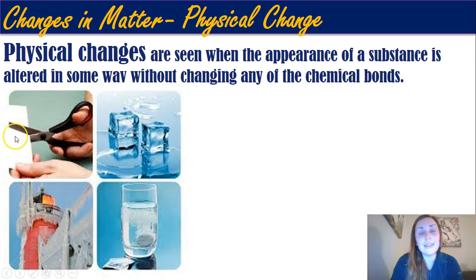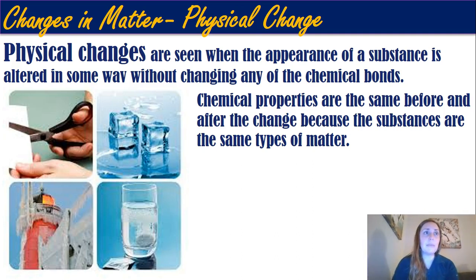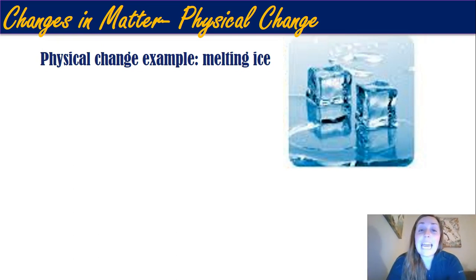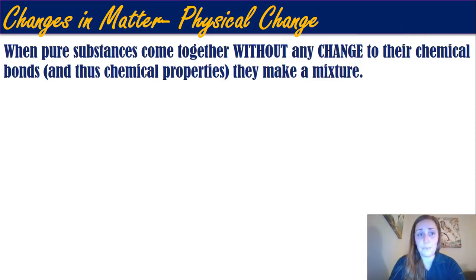For example, if I cut this piece of paper, it's still paper, so it's just a physical change — I didn't alter the atoms within the paper. When you have a physical change, the chemical properties are going to be the same before and after, because the substances are the same. If something started blue, it's still blue; if it's flammable at the beginning, it's still flammable at the end. For example, melting ice is a physical change: you have an ice cube, it melts to liquid water — it's H₂O at the beginning and H₂O at the end. The molecules are exactly the same, so it is a physical change.